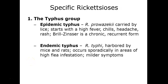Epidemic typhus is carried by lice and starts with high fever, chills, headache, and rash. The Brill-Zinsser disease is the common chronic recurrent form of epidemic typhus. Endemic typhus is harbored in mice and rats and is more sporadic with milder symptoms.